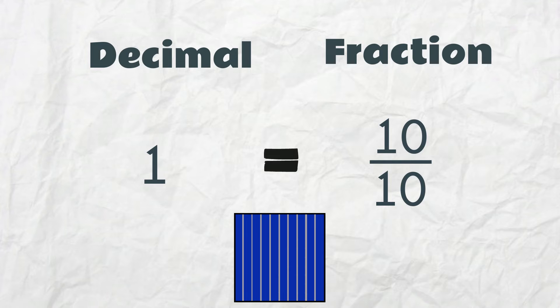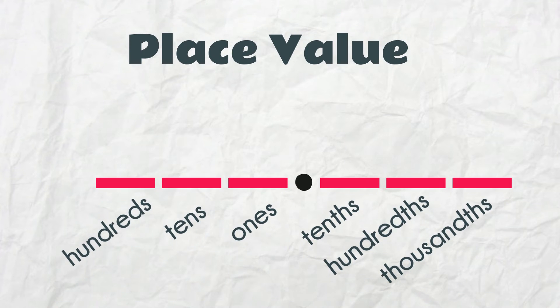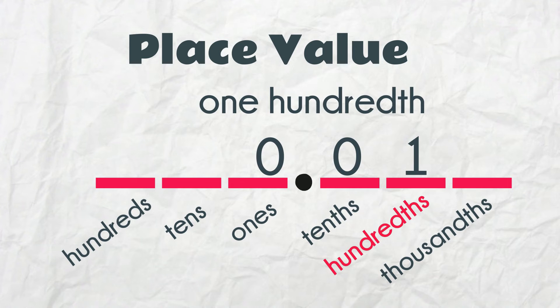Let's move on from tenths. Look at this decimal, 0.01. This is the hundredths place. So we can also read this decimal number as 1 hundredth.